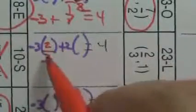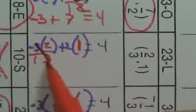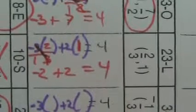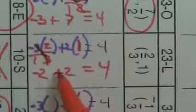Next, x is 2 thirds and y is 1. The 3s cancel giving negative 2, and 2 times 1 is 2. Negative 2 plus 2 is 0. Does that equal 4? No. So forget about box 23.